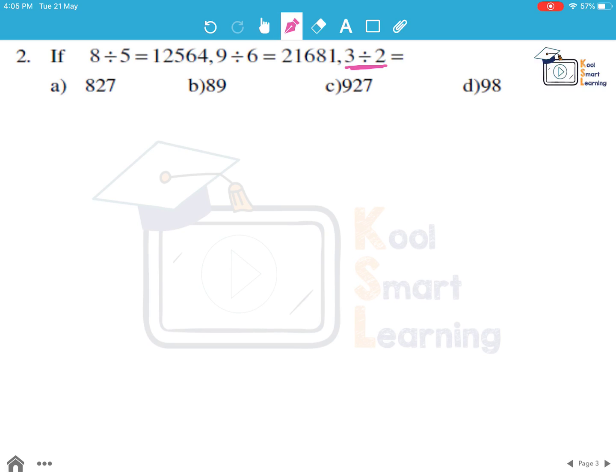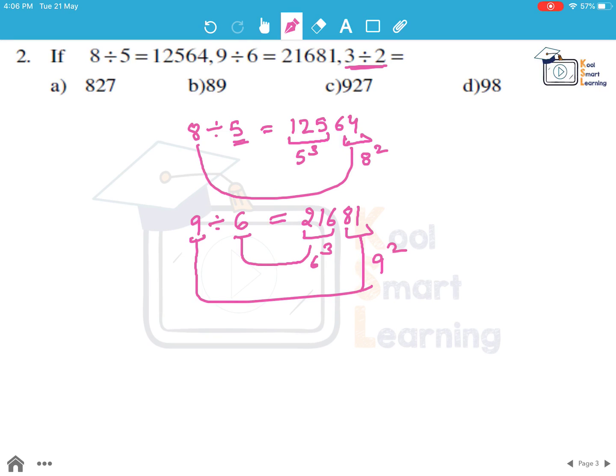So if we see 8 divided by 5 equal to 1, 2, 5, 6, 4. We see that 5 cube is 125 and 8 square is 64. If we see the second thing which is 9 divided by 6 equal to 2, 1, 6, 8, 1. It follows the same pattern. 6 cube is 216 and 9 square is 81. So going by the same pattern, if we see 3 divided by 2, this will be equal to the cube of 2 here which is 8 and the square of 3 here which is 9. So the answer is 89 which is the option B.